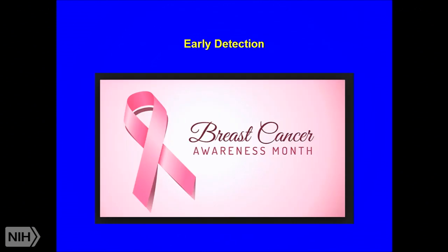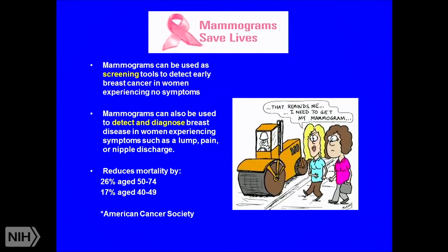Since October is breast cancer awareness month, I want to touch on early detection. Mammograms save lives — they can be used as screening tools to detect cancer when there are no symptoms, and to diagnose breast disease when a woman is having symptoms. Mammograms reduce mortality by 26 percent in the 50–74 age group and 17 percent in ages 40–49. The majority of breast cancers are diagnosed after menopause, which accounts for that discrepancy.